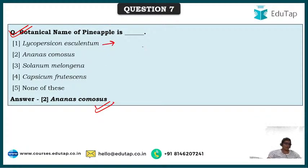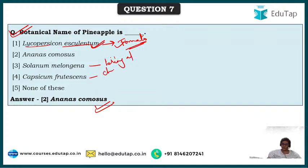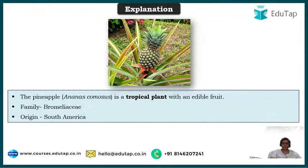Lycopersicon esculentum is the botanical name of tomato — actually it is Solanum lycopersicum, but the name given by Linnaeus, Lycopersicon esculentum, has been so popular that it is generally used. Solanum melongena is brinjal. Capsicum frutescens is wild chili pepper.